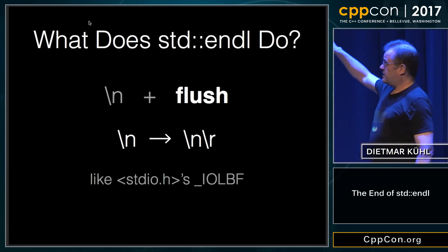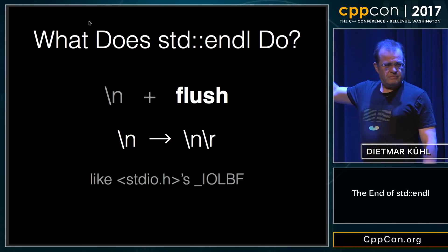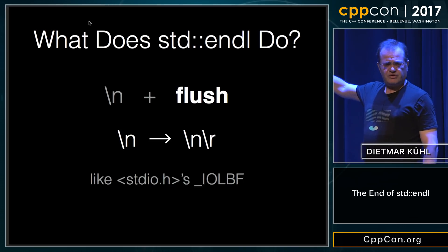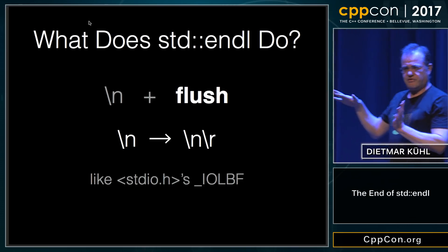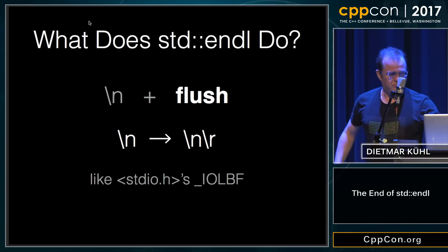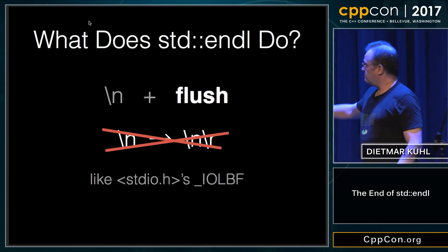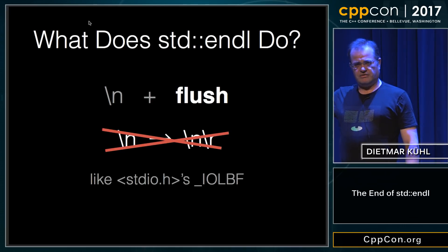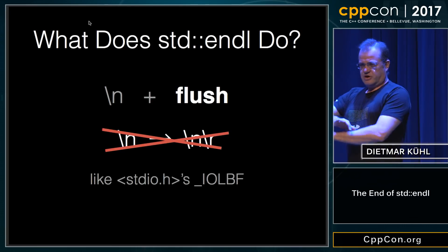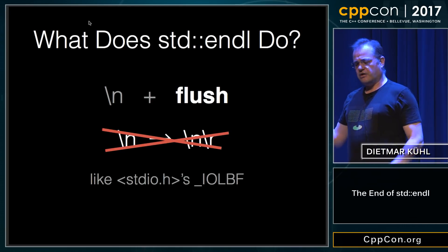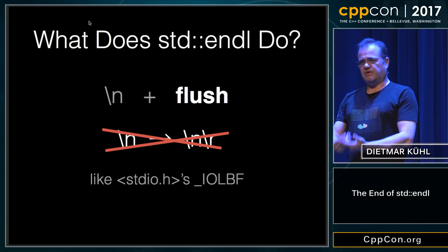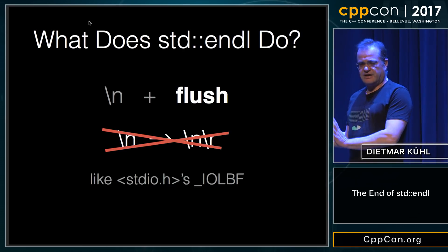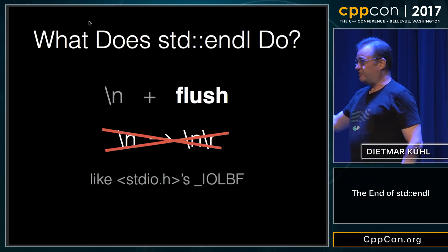That's basically a new line and a flush. There's a common belief that endl also does something to the new line and translates it into an end-of-line sequence — but that's not true, it doesn't. The translation from newline into carriage return newline, depending on which system you are on, happens at the file system level. If you open a file in text mode on some platforms, it does translate it, but endl has no business doing that.